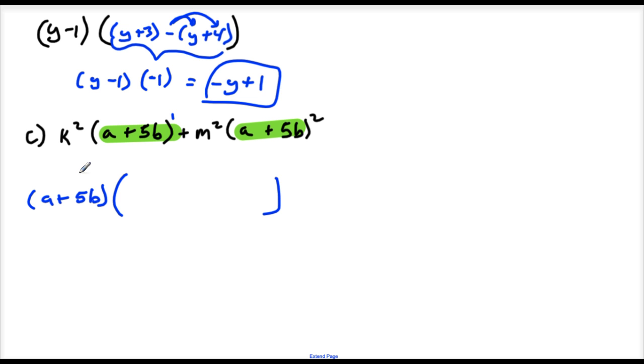So A plus 5B times what gives me back my original? Well, just K squared, right? Plus A plus 5B times what do I write right here? That's going to give me back M squared. Well, like I need an M squared, but then I also need A plus 5B squared.